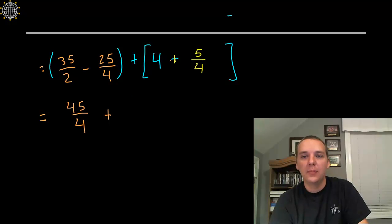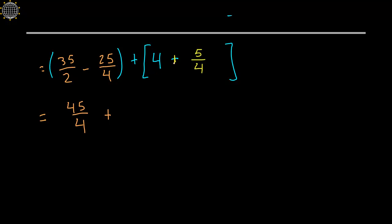Okay, so 4 plus 5 over 4, that will be 16 over 4 plus 5 over 4, which would be 21 over 4.